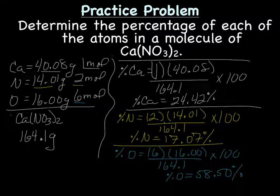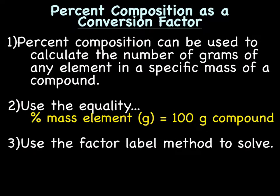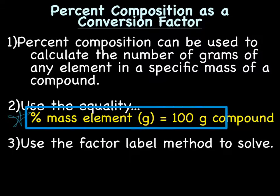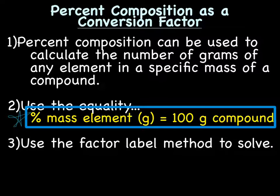Now, the next part is to use this percent to do something else. We can use percent composition as a new conversion factor or an equality, like one mole equals 6.022 times 10 to the 23rd atoms, or one mole equals the molar mass. So, percent composition can be used to calculate the number of grams of any element in a specific mass of the compound. And, we'll be using the equality, percent mass of an element in grams equals 100 grams of the compound. That right there can go on your conversion table. And then, from there, you just use the factor label method, like we've been doing, to solve.